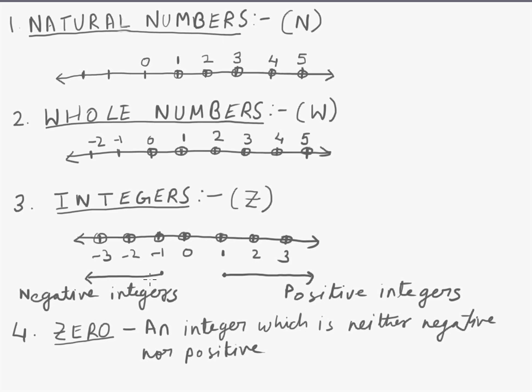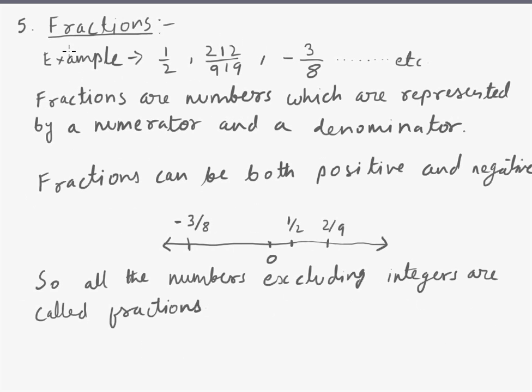As you can see, the arrows marked are positive integers on the right hand side and negative integers on the left side. So these numbers are infinite. Again, integers also include zero. Zero is an integer which is neither negative nor positive.